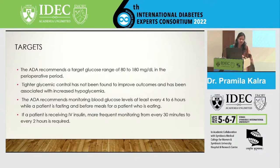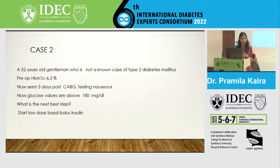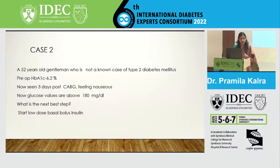The target for the perioperative period, as per guidelines, is 80 to 180 mg/dL. Tighter glycemic control has not been found to improve outcomes in most situations. Glucose values should be checked at least every four to six hours; if the patient is on IV insulin infusion, frequent monitoring — 30 minutes to two-hourly — depending on the clinical situation, is required.